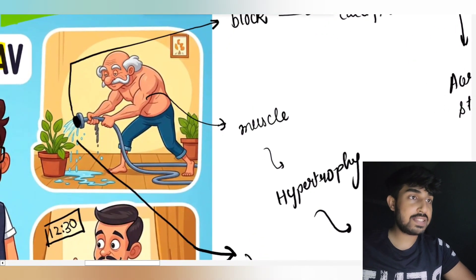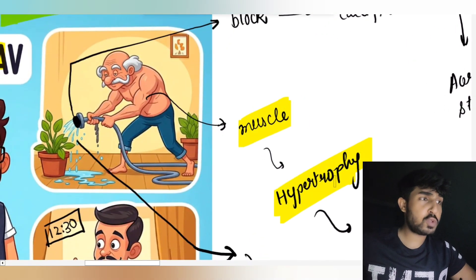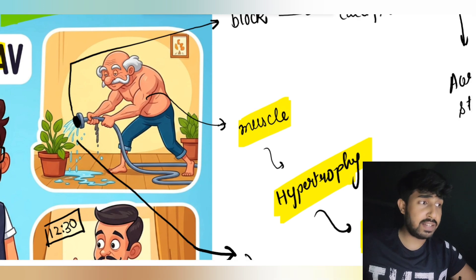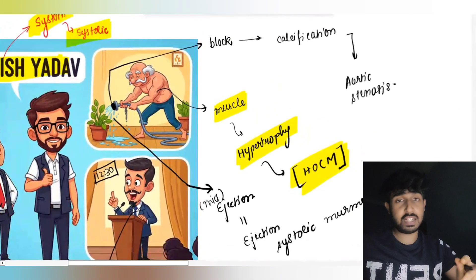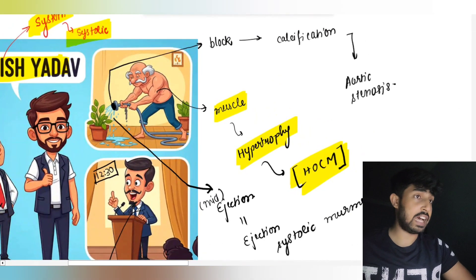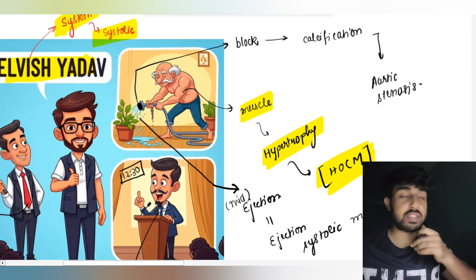Coming towards this Daddu — just see, he is so much muscular, his muscle has undergone hypertrophy. So we are going to discuss about hypertrophic obstructive cardiomyopathy.